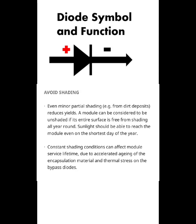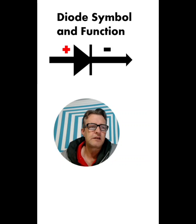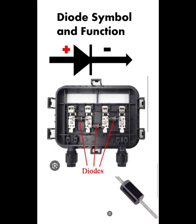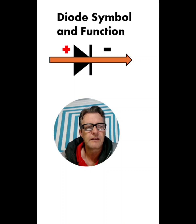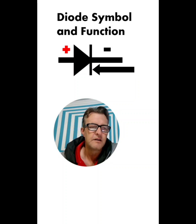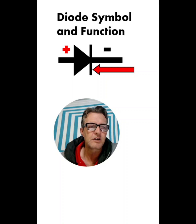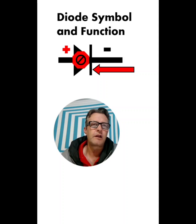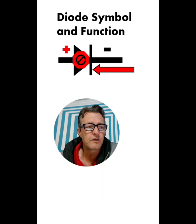Constant shading causes accelerated aging of the encapsulation materials and thermal stress on the bypass diodes. So what does a diode do? A diode prevents reverse current. The flow goes one way and then it opens - it's like a non-return valve on a water pipe. When power comes from the other side as reverse current, it blocks it. This is the symbol for it. You can check how many diodes are in your panels by looking at the manual.